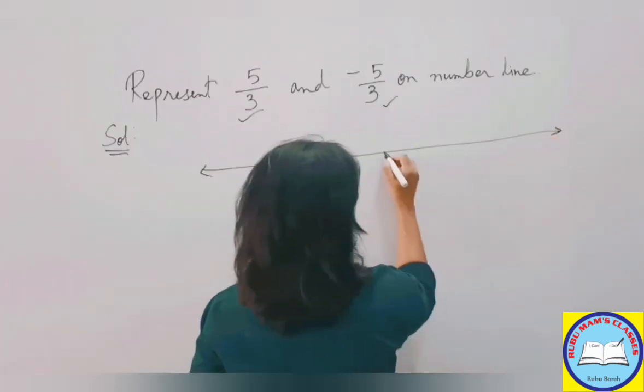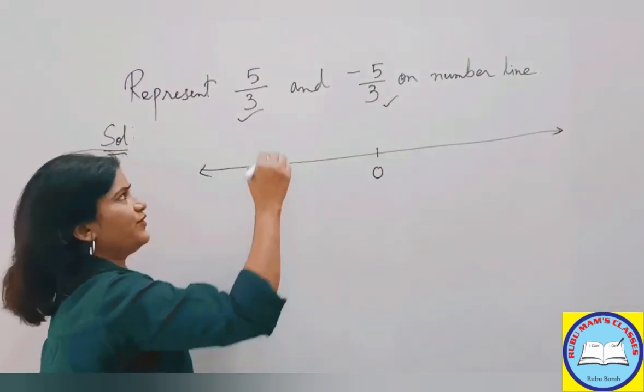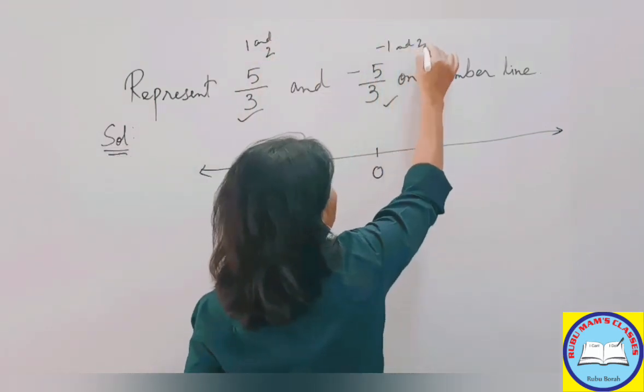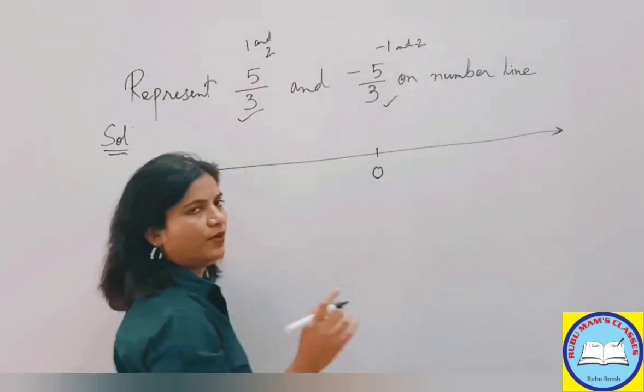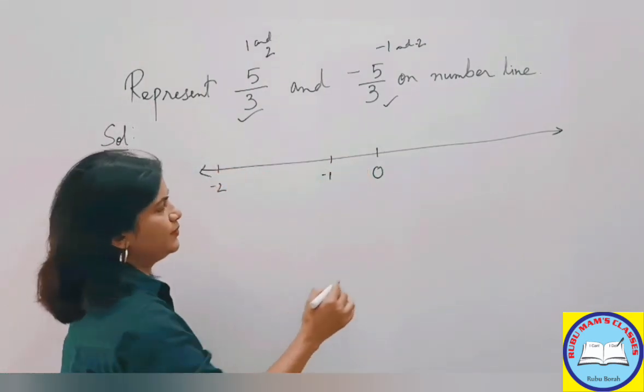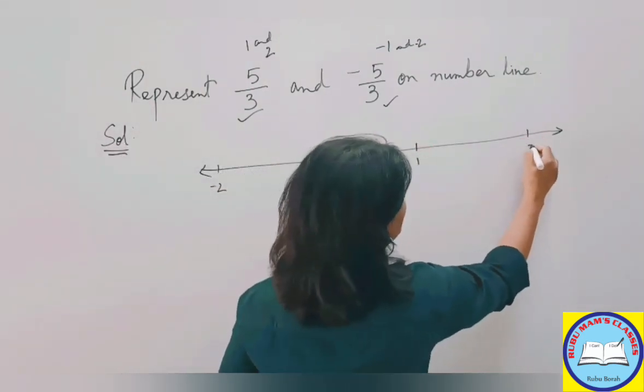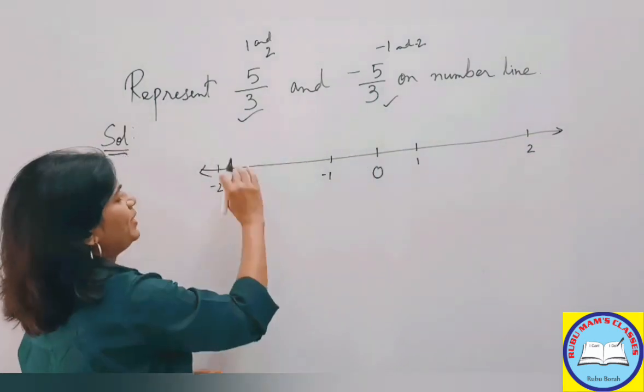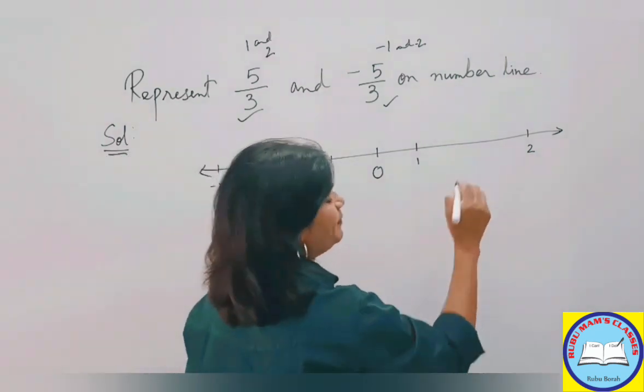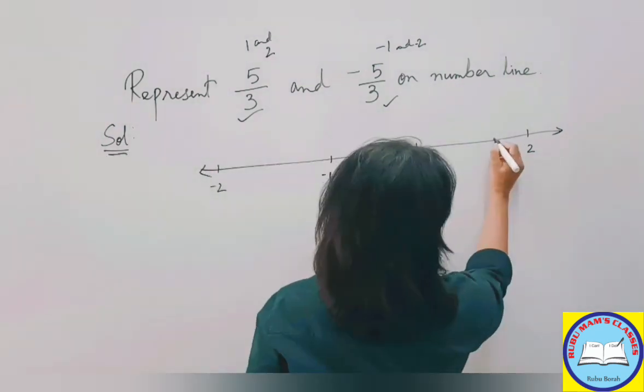0 here, so it would lie between 1 and 2, this would lie between minus 1 and minus 2. So 0 here, minus 1, minus 2 here, mark 1 and 2. How many parts we need to make? See here, denominator is 3, that means we need to make 3 parts, equal parts.